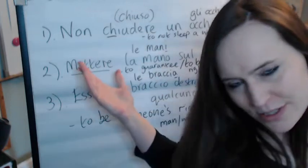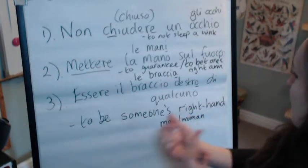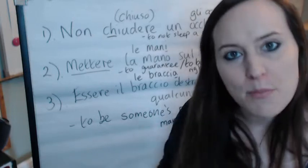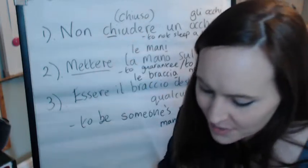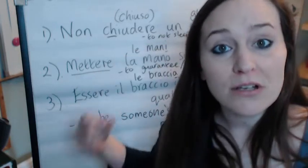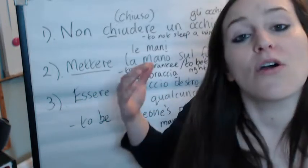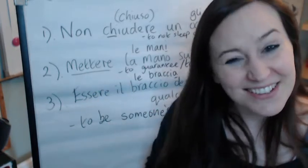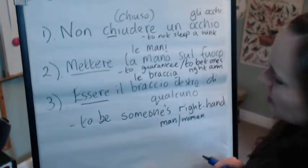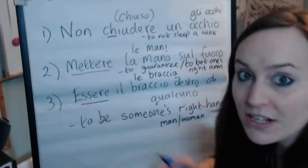Non so perché, ma è così. Essere il braccio destro di qualcuno — here's an example: Davide è il braccio destro del capo — David is the boss's right-hand man. So we've got the verb essere and the body part noun il braccio, which becomes le braccia in the plural.